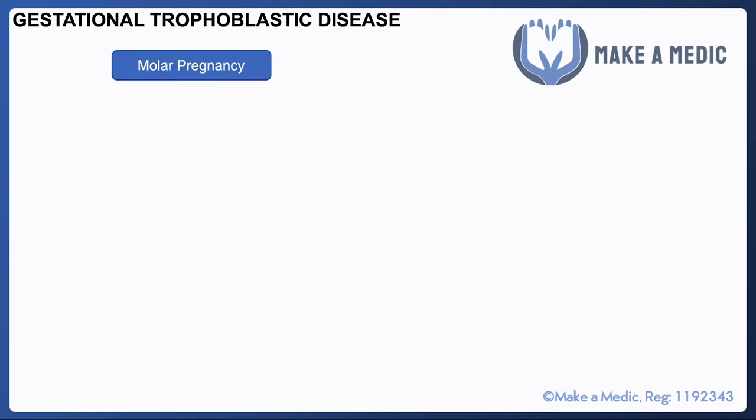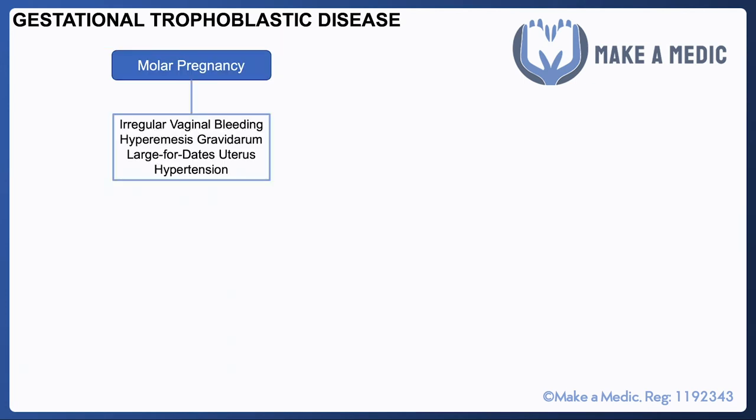A molar pregnancy will usually present with irregular vaginal bleeding and hyperemesis, because the molar pregnancy produces a huge amount of HCG. You'd notice a large-for-dates uterus because the mass is growing much faster than a viable intrauterine pregnancy would, and it can also cause hypertension.